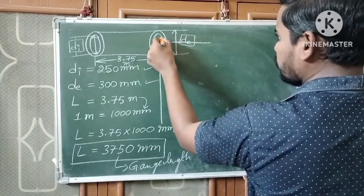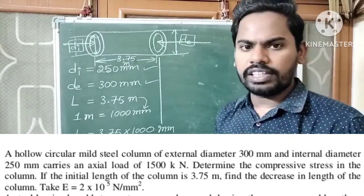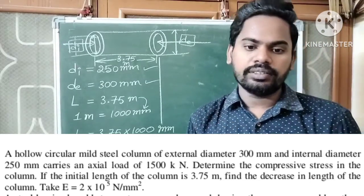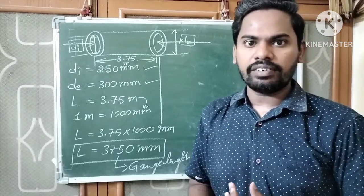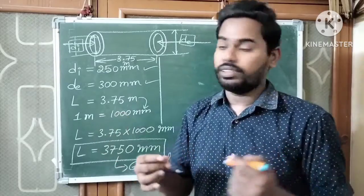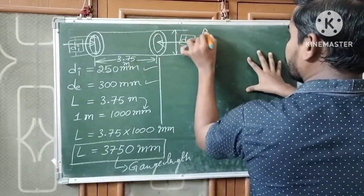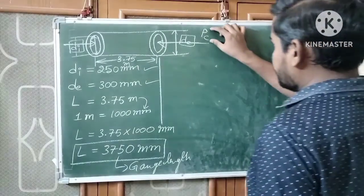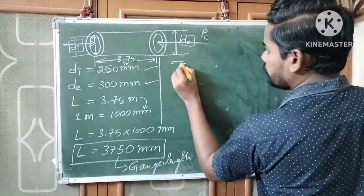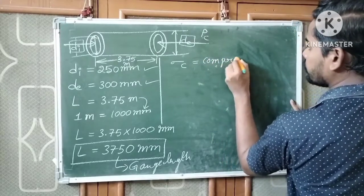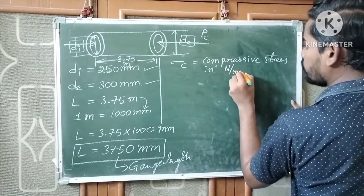This column is subjected to a compressive load — a pushing force. Compressive stress is developed whenever a body is subjected to compressive load. We need to find the compressive stress sigma_C, in units of newton per mm squared (or megapascal). Compressive stress equals compressive load divided by area.